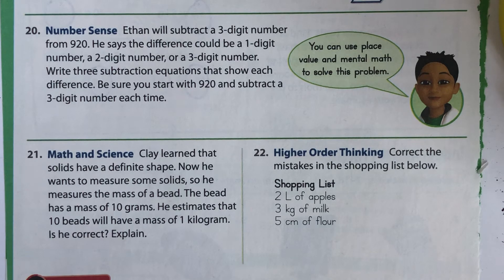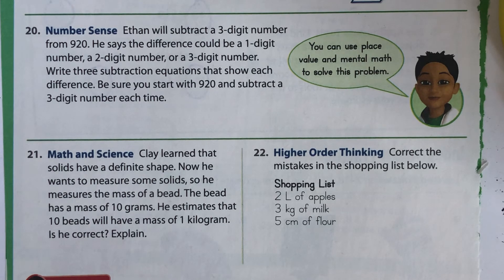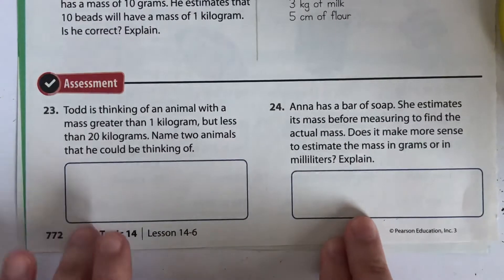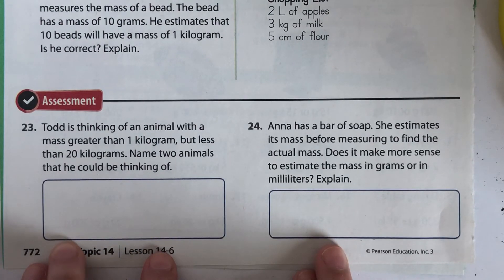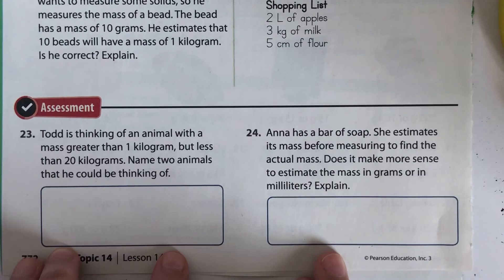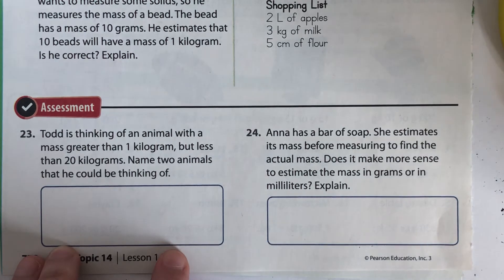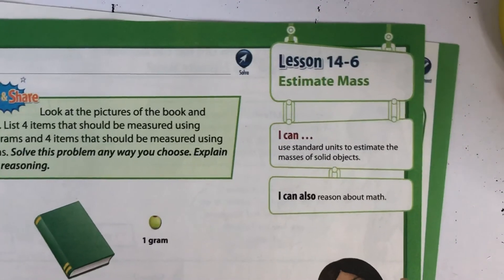Clay learned that solids have a definite shape and wants to measure some solids. He measures the mass of a bead — the bead has a mass of 10 grams — and estimates that 10 beads will have a mass of 1 kilogram. Is he correct? Correct the mistakes in the shopping list: 2 liters of apples, 3 kilograms of milk, and 5 centimeters of flour. Todd is thinking of an animal with a mass greater than 1 kilogram but less than 200 kilograms — name two animals he could be thinking of. Anna has a bar of soap and estimates its mass before measuring. Does it make more sense to estimate the mass in grams or in milliliters?